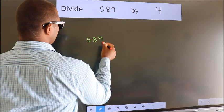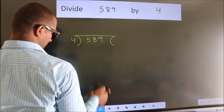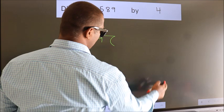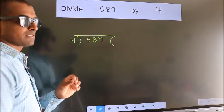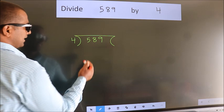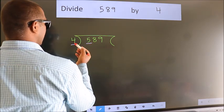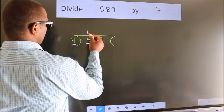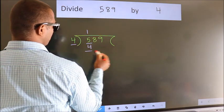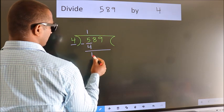589 here, 4 here. This is your step 1. Next, here we have 5, here 4. A number close to 5 in 4 table is 4, once 4. Now, we should subtract. We get 1.